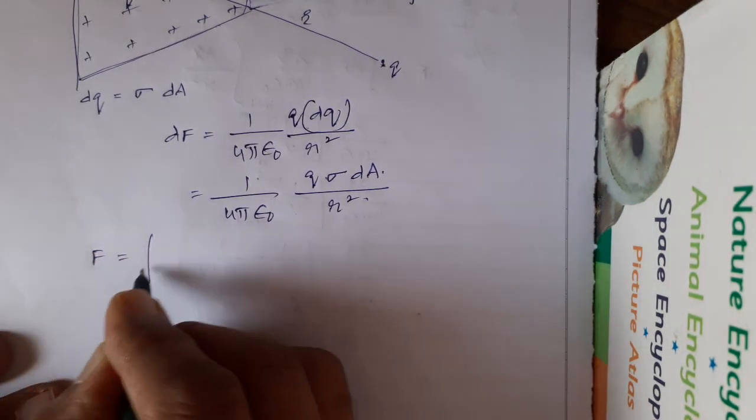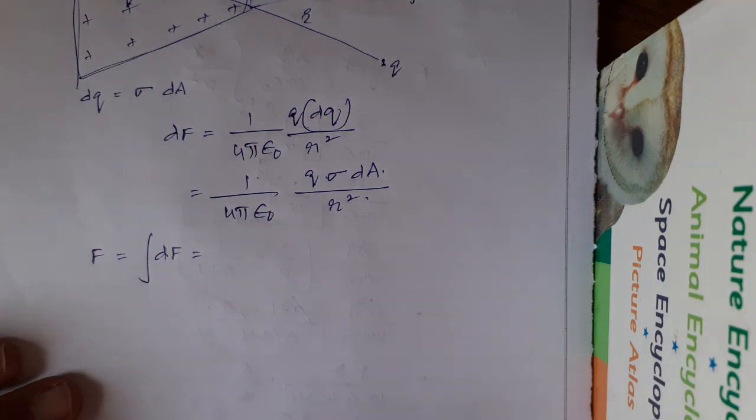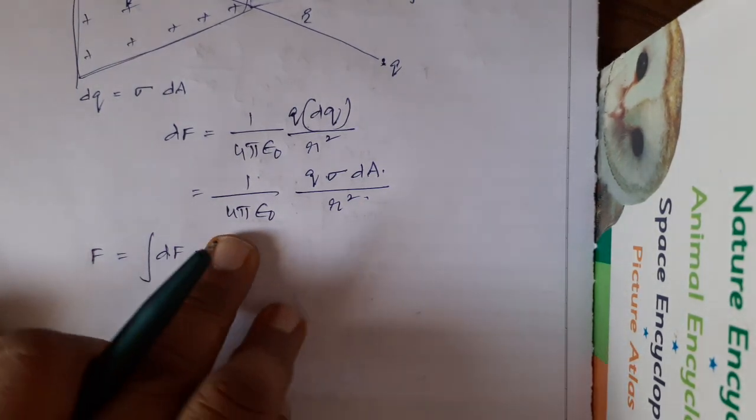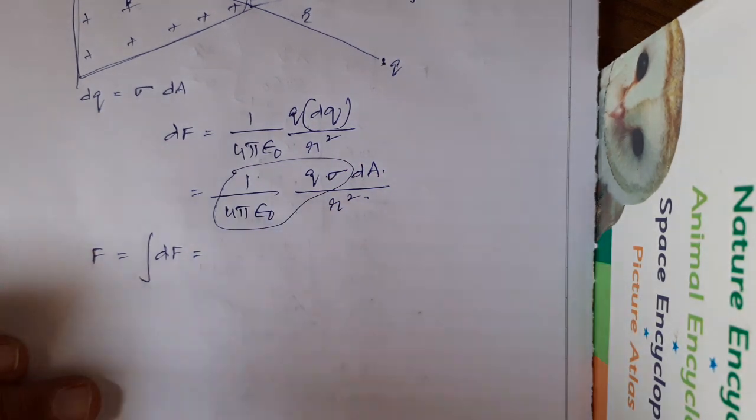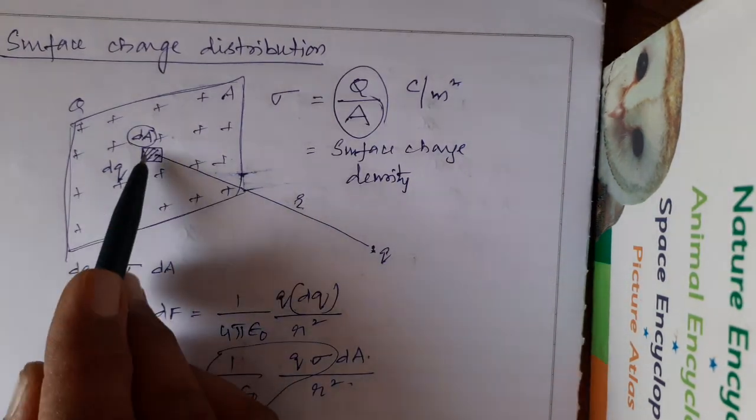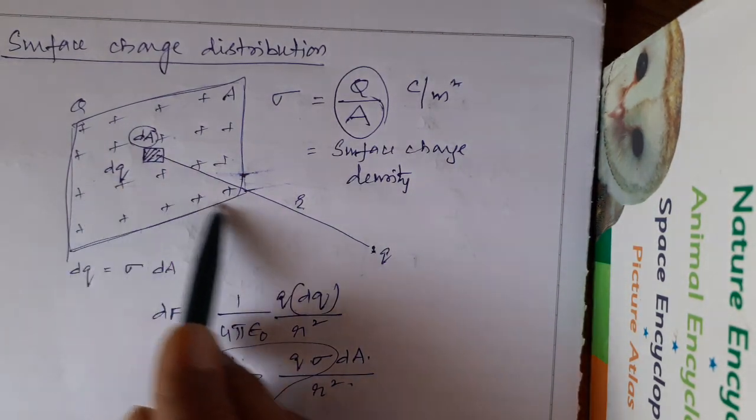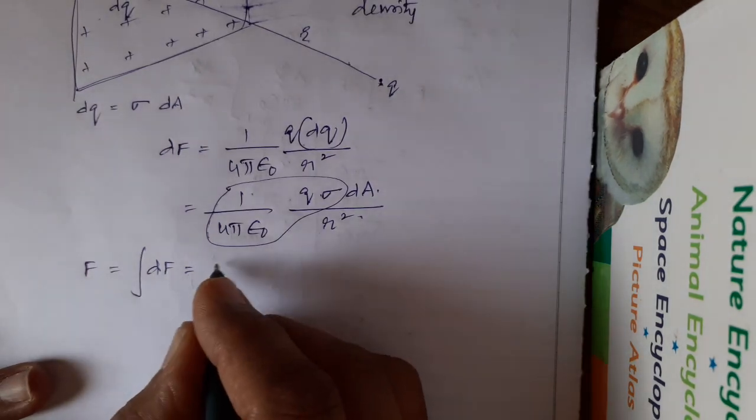Whatever the constants are there, they have to be brought out. These are all constants here. Of course, R is also not constant. R is a variable. Because R changes, if you consider dQ here, R will vary. If you consider this, R will vary. Even direction also changes.